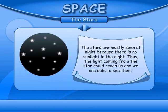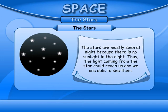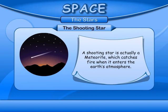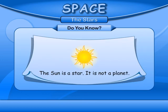The Stars. Stars are mostly seen at night because there is no sunlight at night, so their light can reach us and we are able to see them. The Shooting Star is actually a meteorite which catches fire when it enters the Earth's atmosphere. The Sun is a star; it is not a planet.